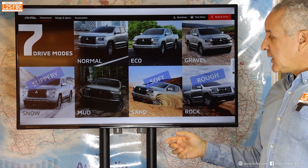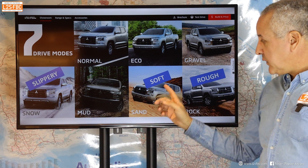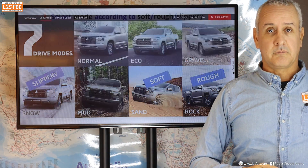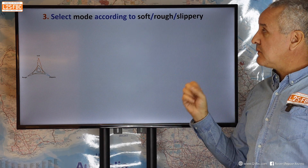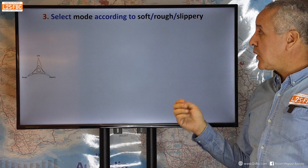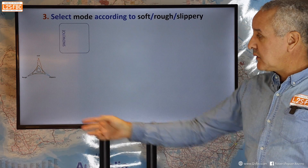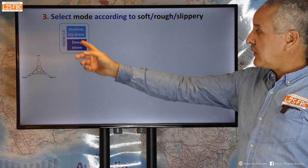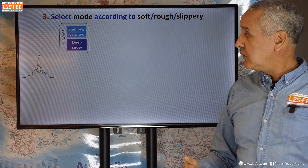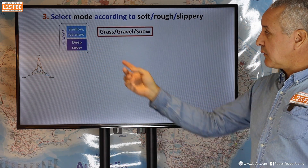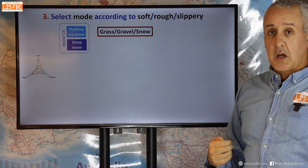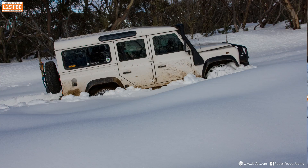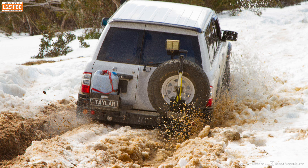For Mitsubishi, there's similarly a slippery mode, a soft mode, and a rough mode. Step three: select the mode according to soft, rough, or slippery. For snow and ice — shallow icy snow versus deep snow — these are actually quite different. Use grass/gravel/snow for the first, and sand mode for deep snow, because using grass/gravel/snow in really deep snow conditions won't get you very far. Mud and ruts might also be appropriate for deep snow.